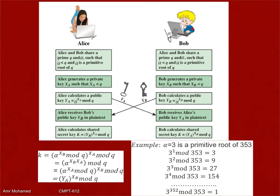We calculate YA, which is alpha to the power XA mod Q, and share this YA. Everybody has YA, everybody has alpha and Q — no problem.